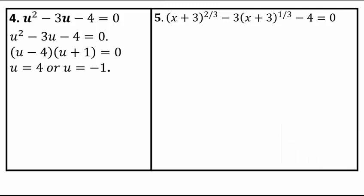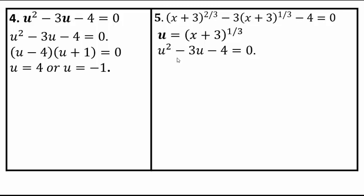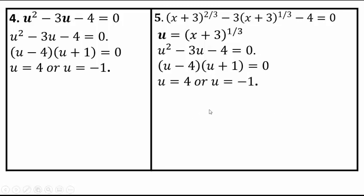Some of you saw that we can say u equals x plus 3 to the power 1 third. Because then you have u squared minus 3u minus 4. If you look at x plus 3 to the power 2 thirds, 2 thirds is the same as 1 third squared. So if you square u, you get x plus 3 to the power 2 thirds. Now you have u squared minus 3u minus 4, which factors as u minus 4 times u plus 1, just like on the left-hand side. Once you have your u, you go back and replace it with x plus 3 to the power 1 third.